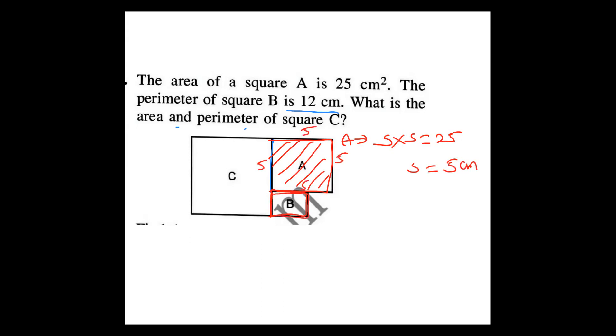Next, I am going for B. They gave perimeter. Perimeter equals to 4 into side equals to 12, or side equals to 12 by 4. Then 3 cm is the side. This side is 3, 3, 3, 3.